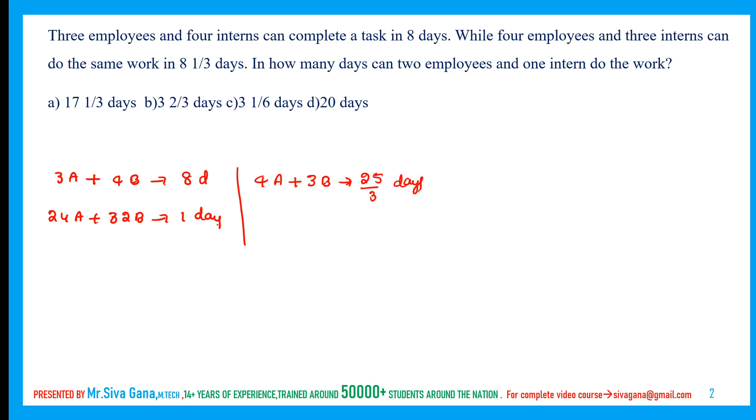So 25/3 into 4, 100/3 employees, and 25/3 into 3, which is 75/3 or 25 interns can finish the task in 1 day. So if I equate these two as both are the 1 day works, what I am going to get is 24 employees plus 32 interns equals 100/3 employees plus 25 interns. From this, the relation we are going to get is 21B equals 28A, which means 3B equals 4A. This is the finest relation between employees and interns.